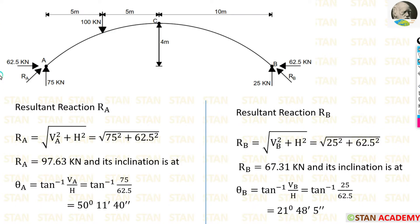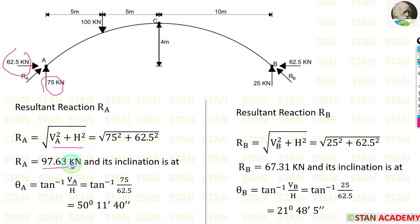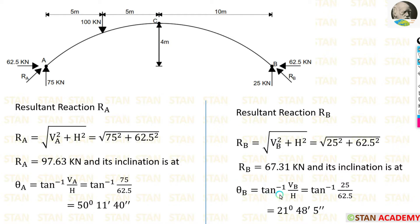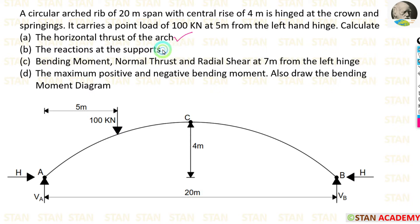Now we can find out the resultant reactions, which occur between the horizontal thrust and the vertical reactions. RA is equal to the square root of VA squared plus H squared. Applying the values we already calculated, we are getting 97.63 kN. We can also find out its location using tan inverse of VA divided by H to get the angle. RB is calculated using the square root of VB squared plus H squared, giving us 67.31 kN. Its angle theta B is equal to tan inverse of VB by H.